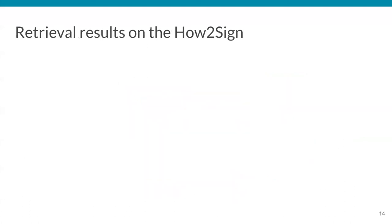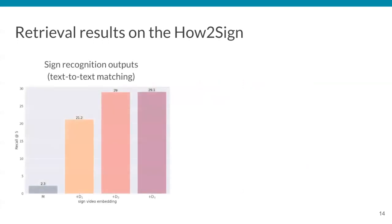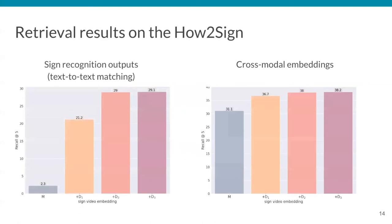Now let's take a look at the results we obtain by using different sign video embeddings. We compute the recall at k metric, in this case k being 5. We present on the left the results when using the output of the sign recognition model, in which we use text-to-text matching. On the right, the learned cross-modal embedding, which performs better than the text-based models.